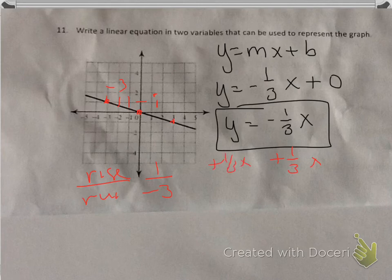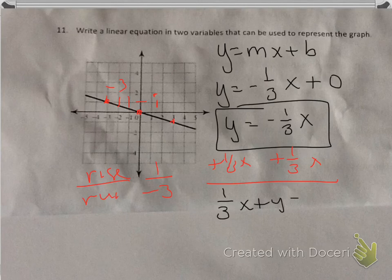And so if I did that, then I would have something like one-third x plus y equals zero. And then I'd have to get rid of the fraction, so I'd multiply the denominator to everything.